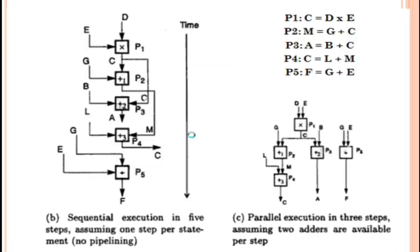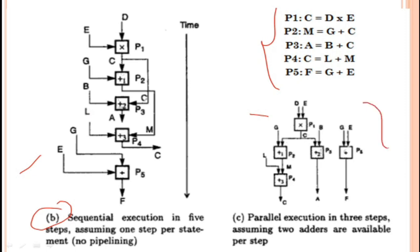Now we will see execution of these statements. There are two types: statements can be executed sequentially one by one, or they can be executed in parallel. The first figure shows sequential execution in five steps — it consists of five processes P1 to P5 executed one after the other, assuming one step per statement with no pipelining.